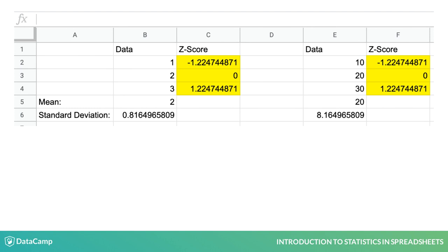Despite being 10 times larger, the distance of each point to their respective samples' mean and standard deviation are the same as in the first column. And this allows you to easily compare the two columns.